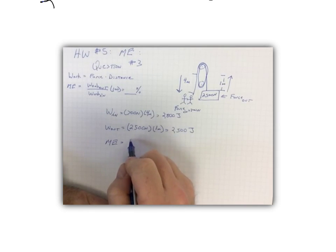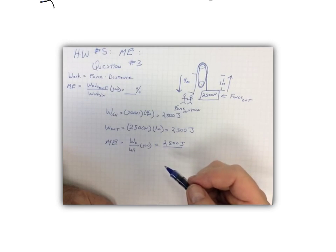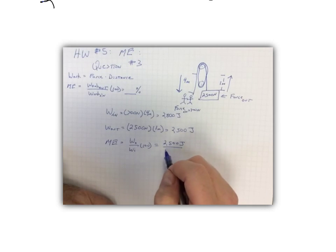And then it's just a simple matter of plugging them into our mechanical efficiency formula. So again it's work out divided by work in times 100. So work out 2,500 joules divided by the work in 2,800 joules.